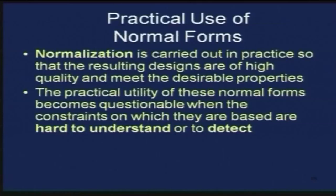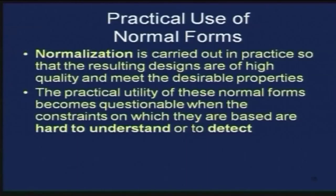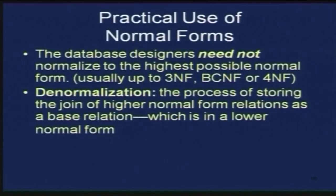Given a relational design or schema design, you can keep on progressively applying these normal forms. Fourth and fifth are not generally used — if you go up to BCNF it is sufficient. It is a subsumption: 2NF assumes 1NF is there, 3NF assumes 2NF, and so on. Normalization is carried out in practice so that the resulting designs are high quality. The practical utility of higher normal forms becomes questionable when the constraints on which they are based are hard to understand or detect.